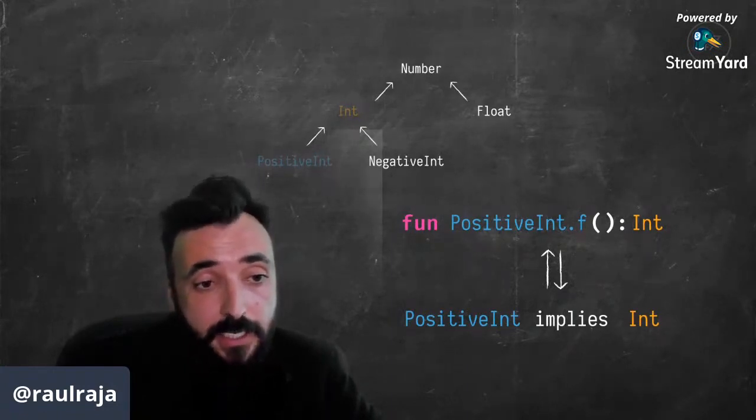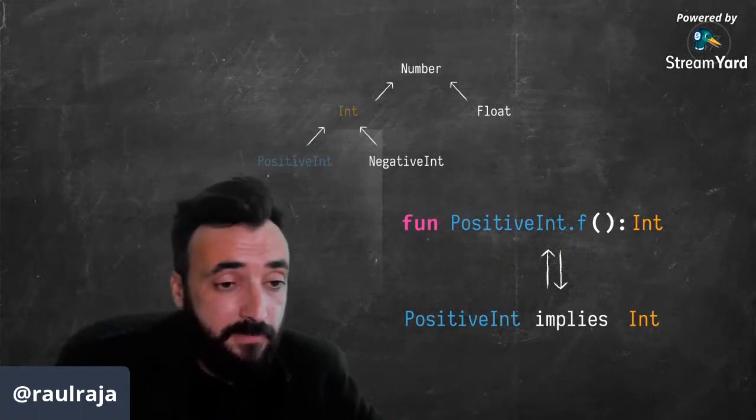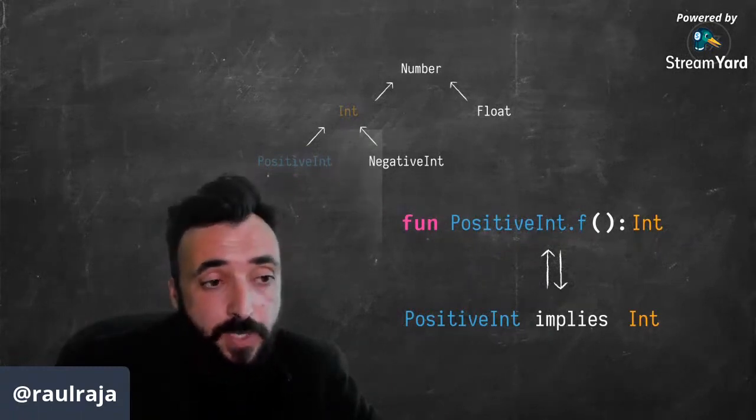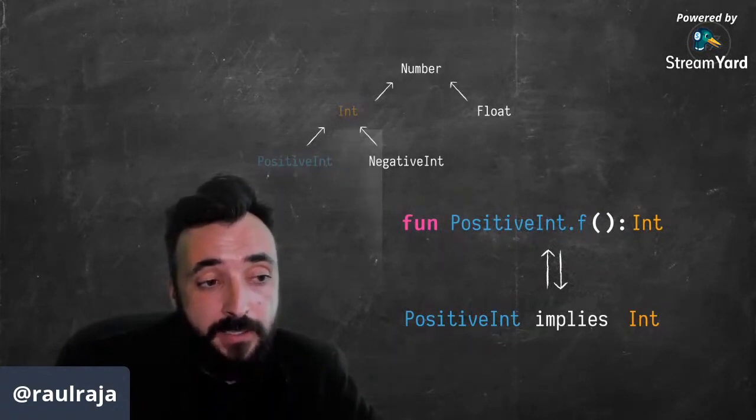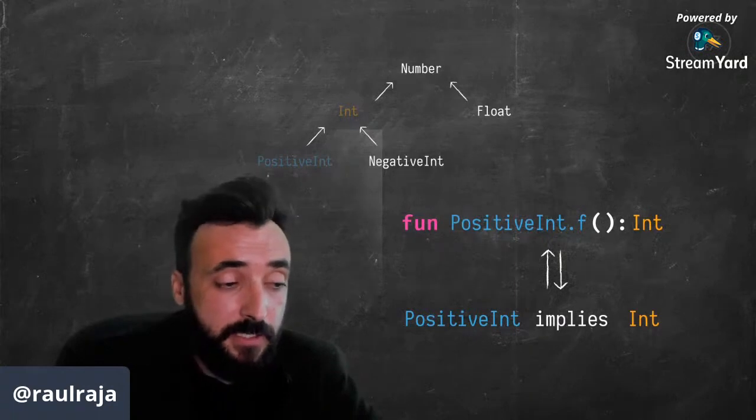While subtyping is the same as implication in logic in terms of Kotlin, we know by the Curry-Howard correspondence that this rule of implication is not that of per se that it has to be through a subtype relationship, but also that a function can bridge that gap. That is, if we have a function that takes us from positive int to int, we can potentially, ad hoc, enhance these types to give them new meanings. And this is what we're going to see today with these demonstrations.